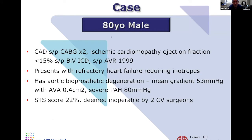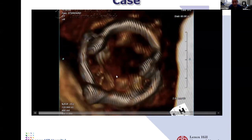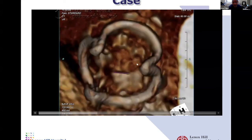Here's an 80-year-old patient who had prior cardiac surgery for bypass. His heart function is diminished — he had an aortic valve replaced over 15 years ago and presents with refractory heart failure on blood pressure-stimulating medications. We know this biological valve has failed and his operative risk for open-heart surgery is very high. His risk of mortality is over 20%, which most surgeons find prohibitive. These biological valves typically last 10 to 15 years, but when they fail, in the past the only option was open-heart surgery.